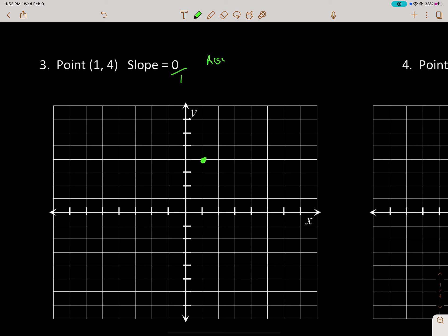Rise over run. It's zero over one, so remember: slope of zero is a horizontal line. That's really the fastest way to do this, but we can still use our rise over run. If I start at